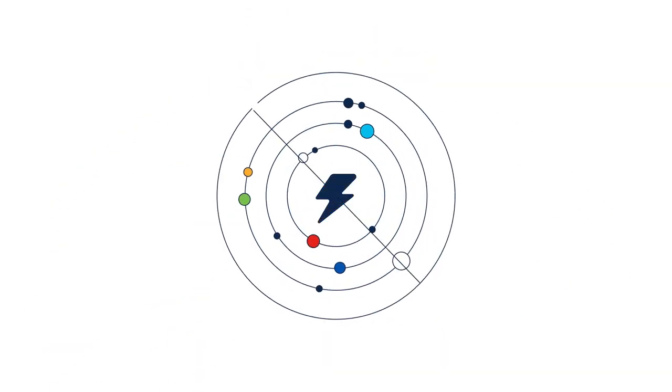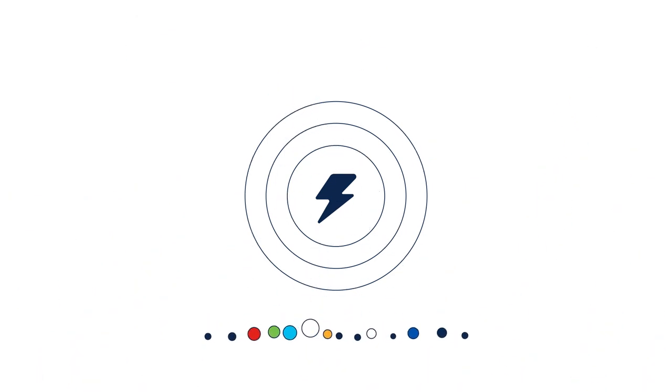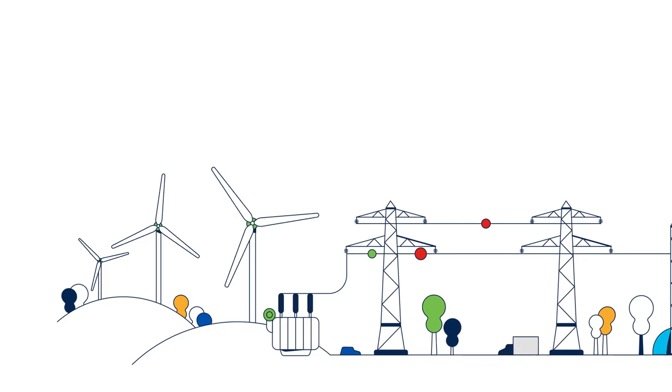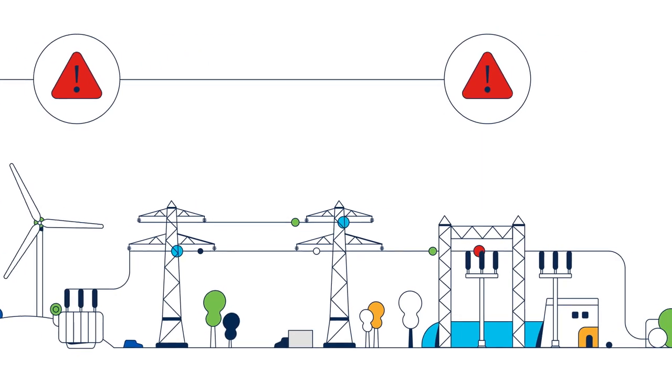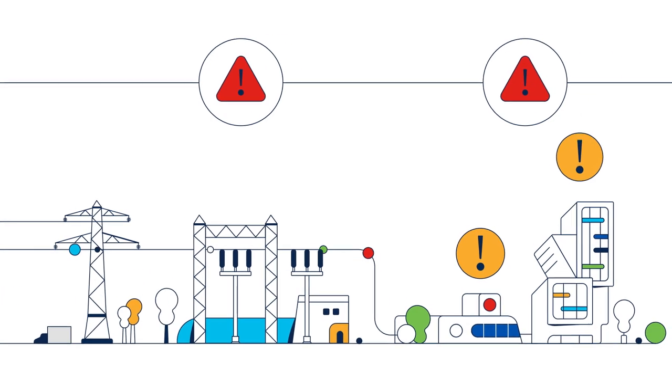A shutdown, a storm, a breakdown, a cyber attack. So many things can go wrong on that journey your power takes from turbine, to transformer, to substation, to every house and business in town.